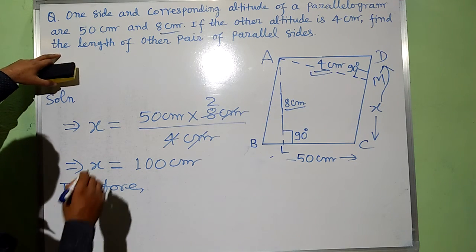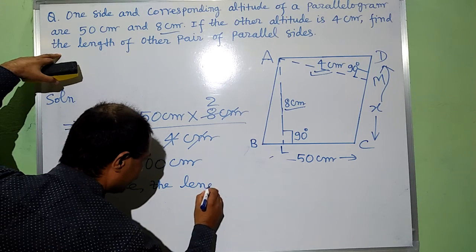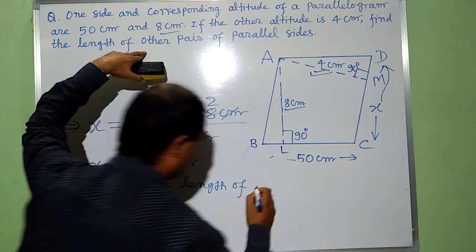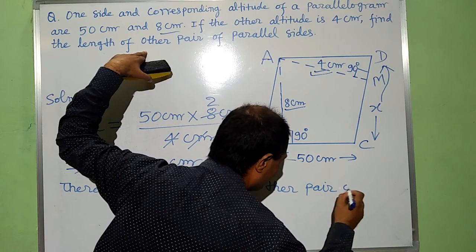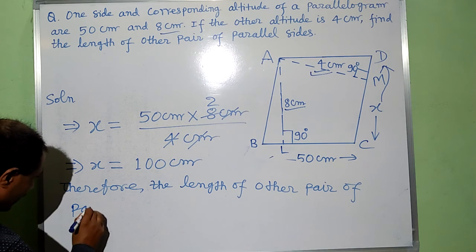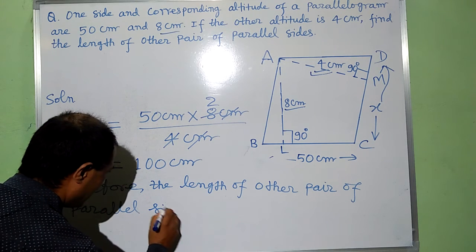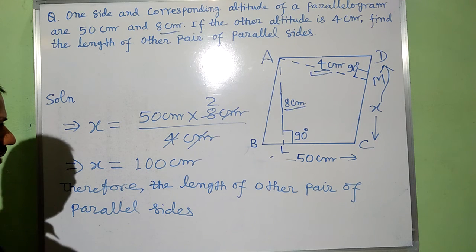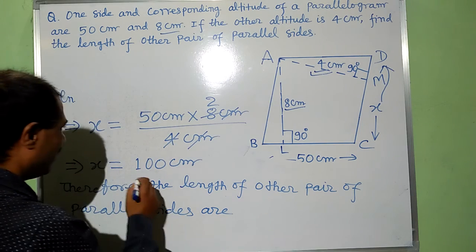Therefore, the length of other pair of parallel sides are 100 cm.